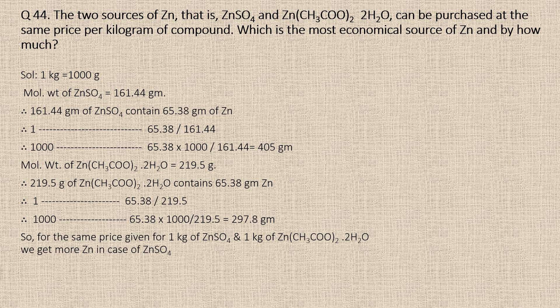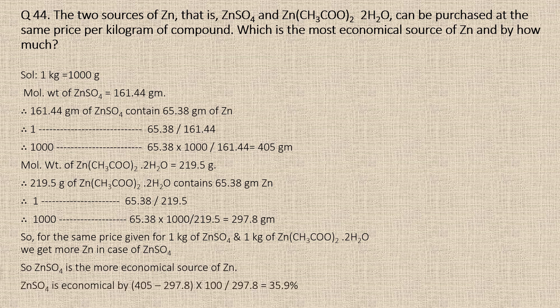For the same price of 1 kg, zinc sulfate provides more zinc than zinc acetate dihydrate. So zinc sulfate is the more economical source of zinc. The percentage difference is: (405 minus 297.8) divided by 297.8 into 100, which is equal to 35.9%.